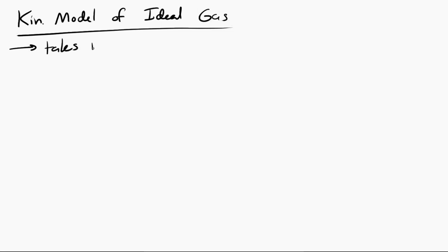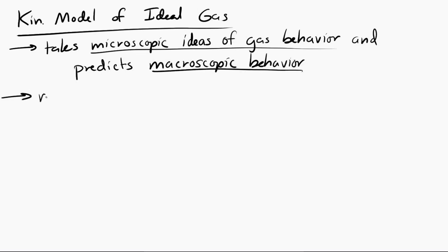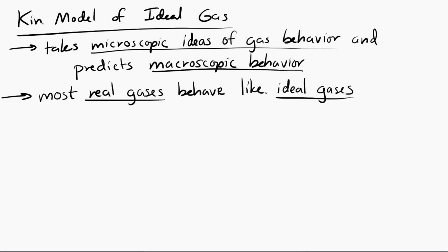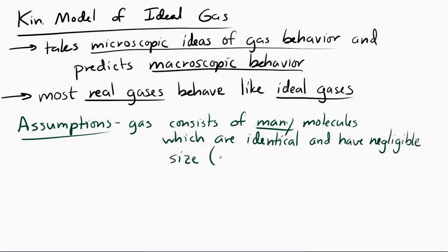Let's finish up with the kinetic model of an ideal gas. This is a very important model in the history of physics. What it does is take the idea of microscopic molecules and how they behave, and use it to predict the macroscopic behavior of gases. Technically it only applies to ideal gases; however, many real gases — especially those we interact with in normal situations — often behave very similarly to an ideal gas. The model of an ideal gas makes a couple of assumptions. One is that the gas consists of many, many molecules that are all identical and have negligible size. This model won't apply to a gas containing only, say, three molecules.